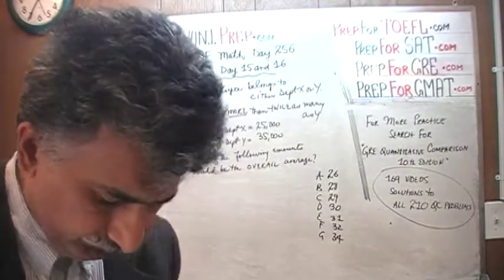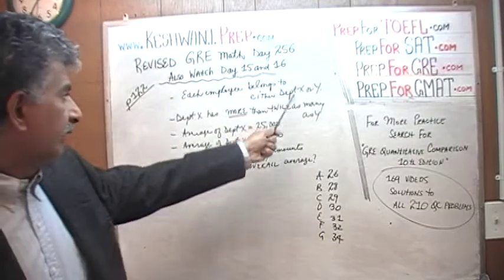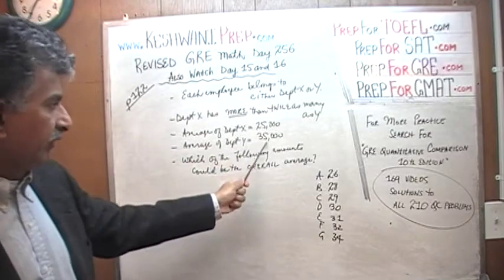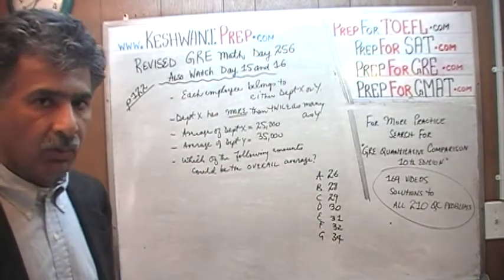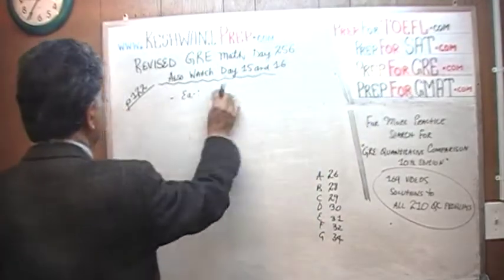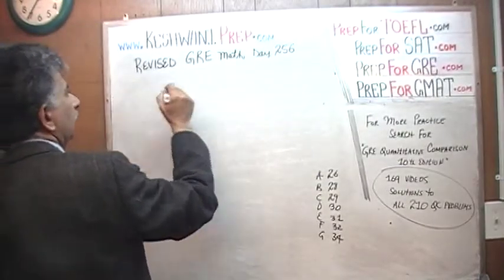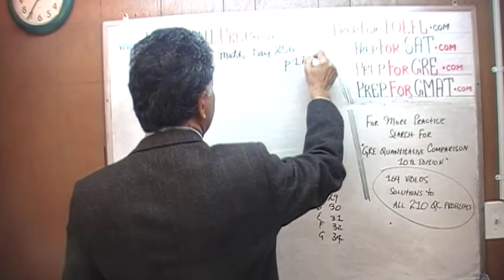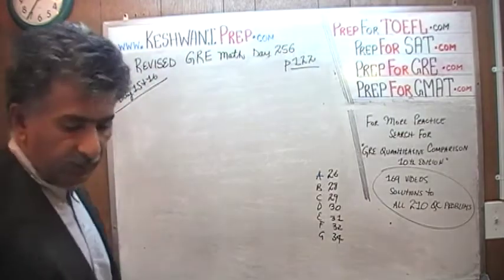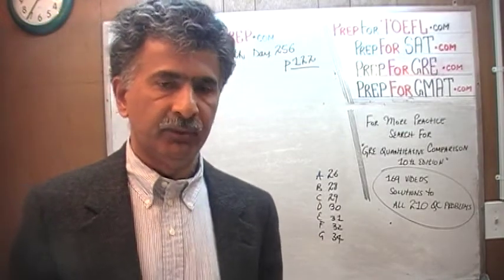Let's get going. We are going to start by assuming that there are exactly twice as many people in X as in Y, and we will see what happens at that point. Page 122 is also the same as day 15 and 16.